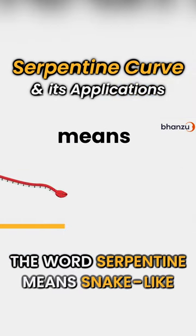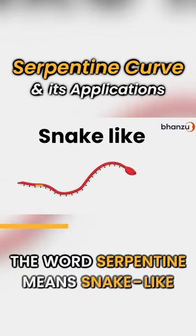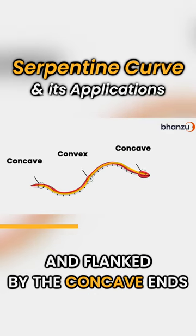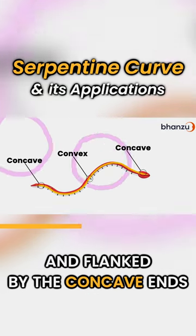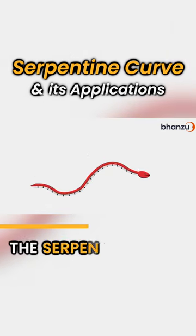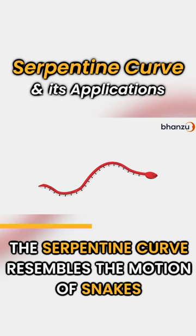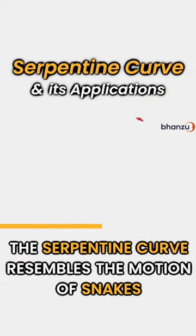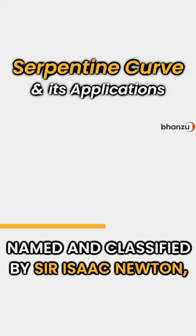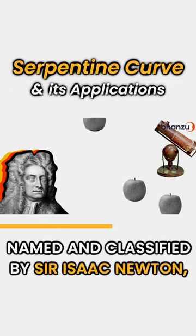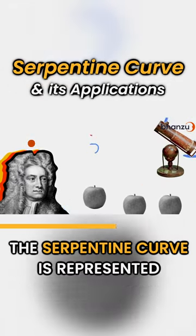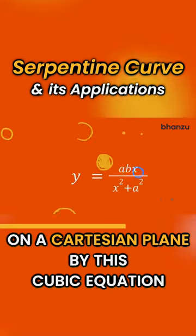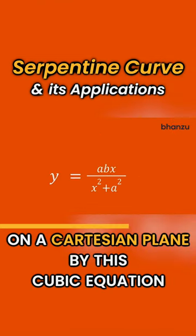The word serpentine means snake-like. It's convex in the center and flanked by the concave ends. Like the word implies, the serpentine curve resembles the motion of snakes. Named and classified by Sir Isaac Newton, the serpentine curve is represented on a Cartesian plane by a cubic equation.